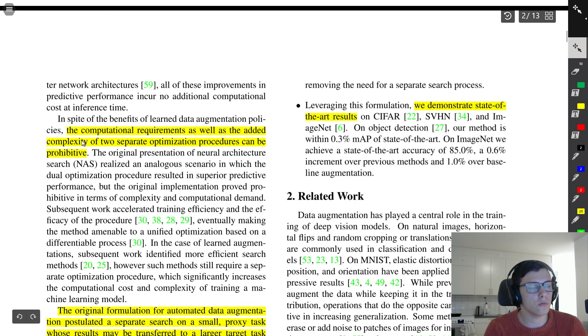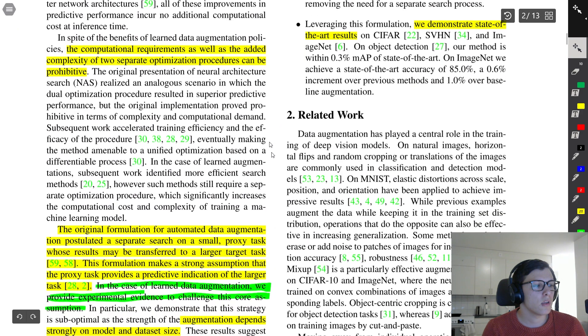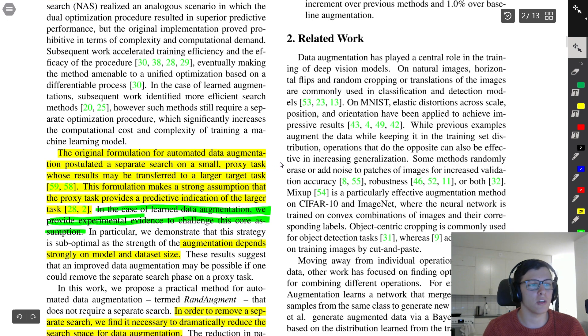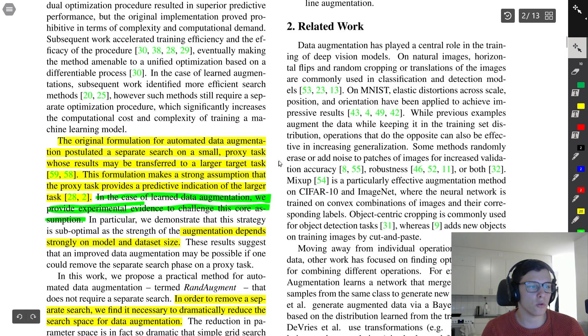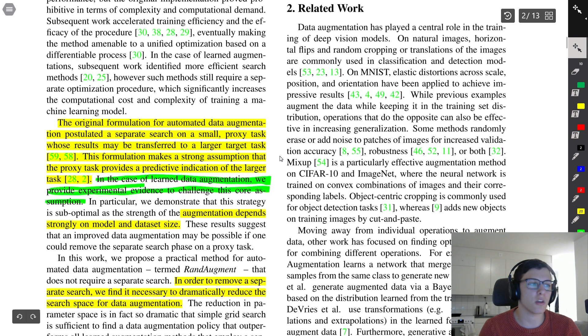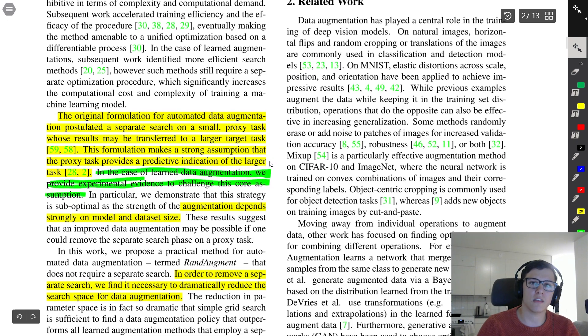They go on to mention that the computational requirements as well as the added complexity of two separate optimization procedures can be prohibitive. The original formulation for automated data augmentation had a separate search on a small proxy task, and then those results can be transferred to a larger target task. This formulation makes a strong assumption that finding the optimal hyperparameters for the data augmentation policy on a proxy task actually transfers to the larger task of training the larger model on a larger dataset.